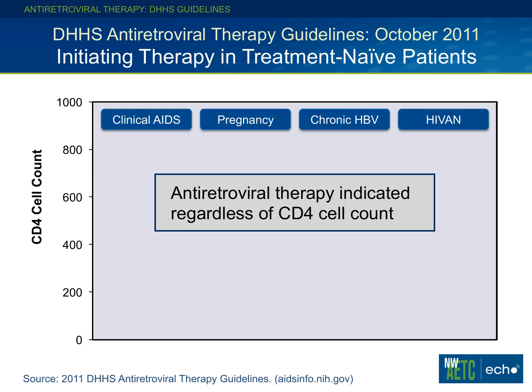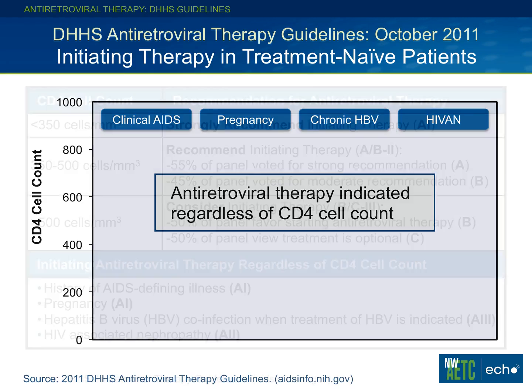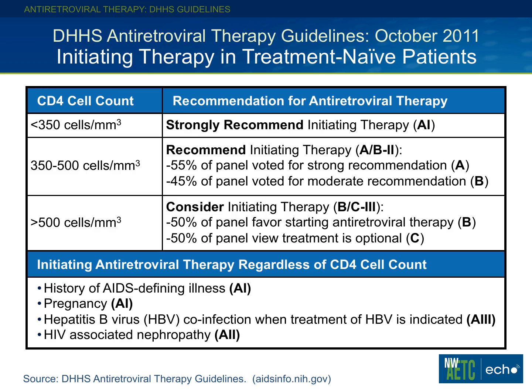It's important to remember there are conditions for which CD4 cell count doesn't drive your decision on when to treat. Those four conditions are: any clinical AIDS-defining illness such as Kaposi sarcoma; any pregnant woman, where you're treating to prevent mother-to-child transmission; any patient with chronic hepatitis B infection that must be treated; and HIVAN, or HIV-associated nephropathy. Treatment is recommended for all of those patients regardless of CD4 count.